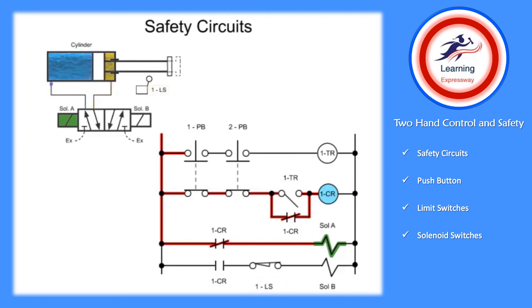At this point in the cycle, the cylinder will remain extended indefinitely until at least one push button is released. If one push button is released, the control relay will lose power, which causes 1CR to remove power from solenoid A and connect power to solenoid B.